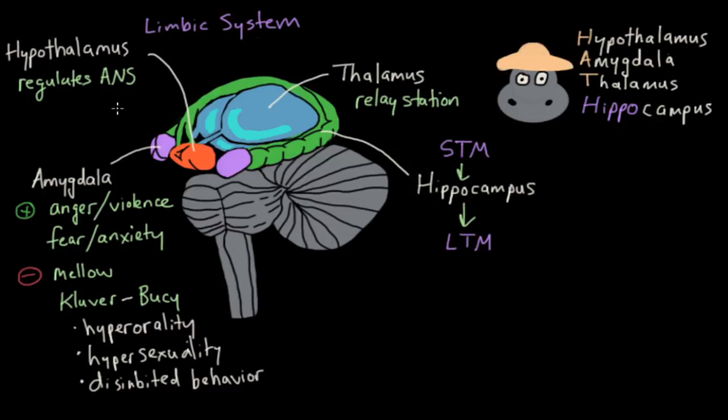So that's the limbic system. And these are the four basic structures, the thalamus, the amygdala, the hippocampus, and the hypothalamus.